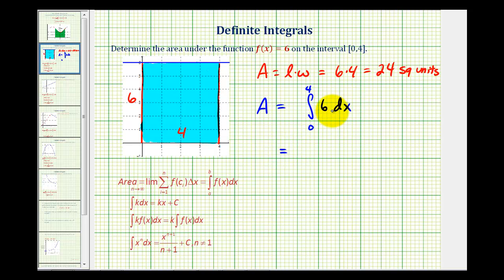Well, the anti-derivative of six would be six x plus c, but for definite integration, we leave off the constant of integration because when we determine the difference, the constants of integration would cancel out anyway. So we'll evaluate six x at four and then zero, then determine the difference. So we'll first replace x with four and then with zero.